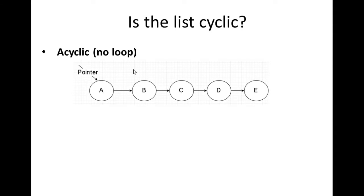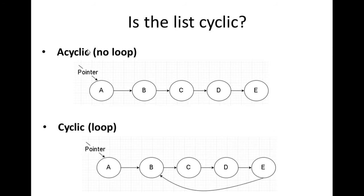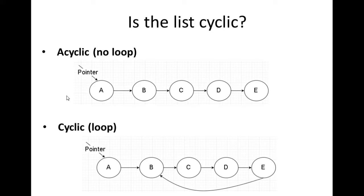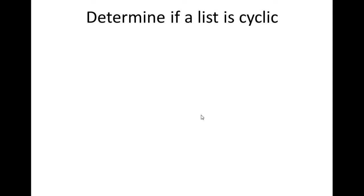This is what a loop is — the list is cyclic. This slide shows the difference between a non-cyclic and a cyclic linked list. The top list has no loop, no cycle, and the list below does have a cycle — just to show the comparison between the two.